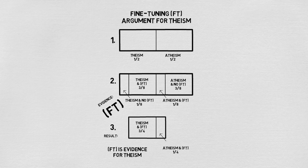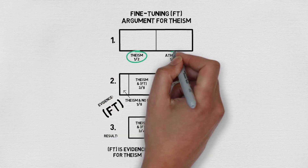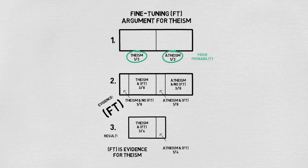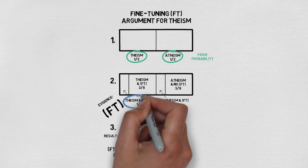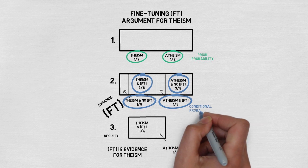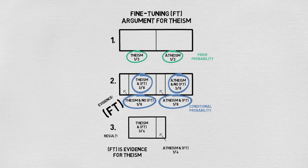Take a look at the first bar and the half probability assignments we've given to theism and atheism. These are called our prior probabilities — the probabilities we give to set out the degree of certainty we have, or ought to have, in certain hypotheses before we've taken this bit of evidence into account. How we determine what these values should be is subject to debate. Now look at the second bar and the probability assignments of one eighth, three eighths, one eighth, and three eighths. These are called conditional probabilities, since they're in the conditional form — meaning that given some X, Y has a probability of a certain value. So given theism, fine tuning has a certain probability; given atheism, fine tuning has a certain probability.